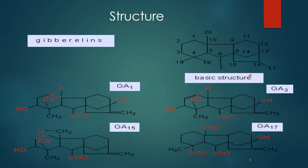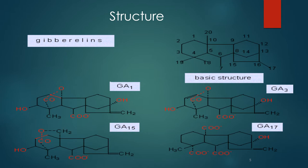This is the basic structure of a Gibberellin and these are different types of Gibberellins, that is GA1, GA3, GA15, and GA17. This is the main basic structure and there are different types of Gibberellic acid and their structures.